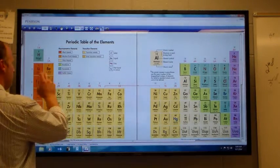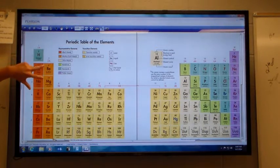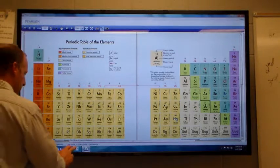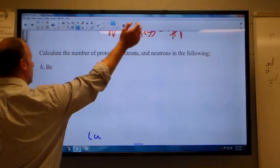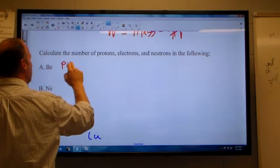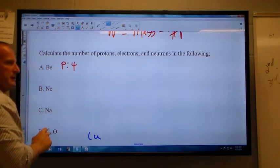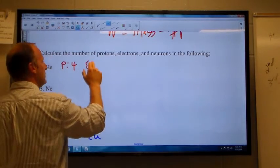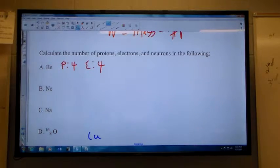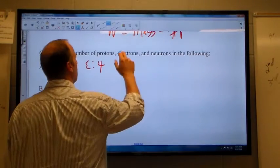All right, so we have Be. Be has two numbers here, a four and a nine. And so we're going to say if it has a four and a nine, then the number of protons is the small number, four. Since it is an atom, the number of electrons is also four because atoms are neutral.